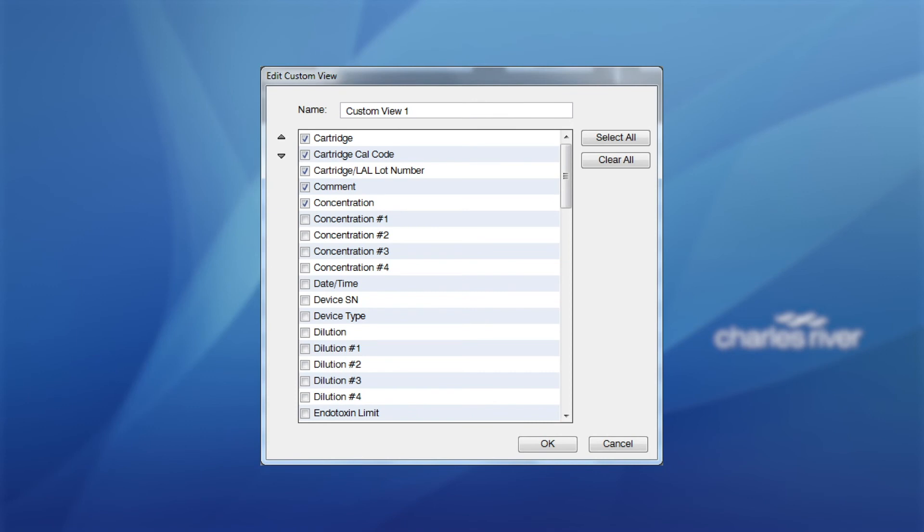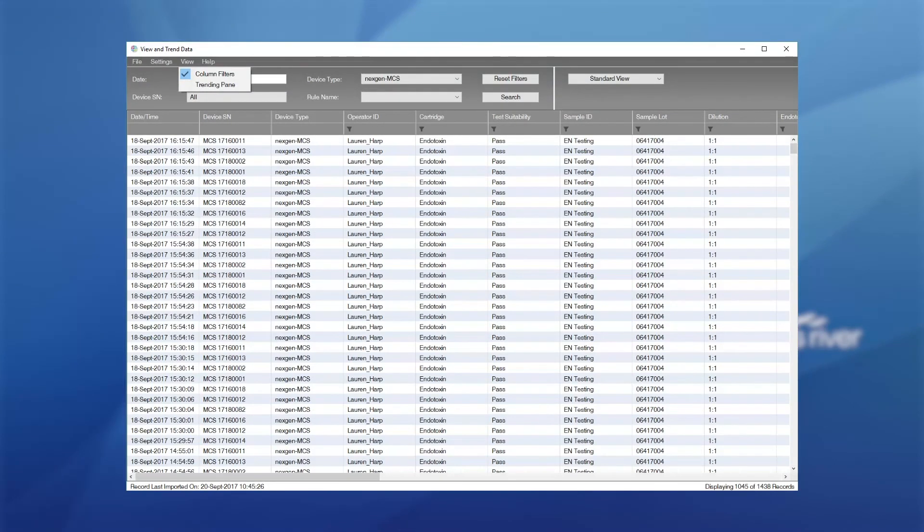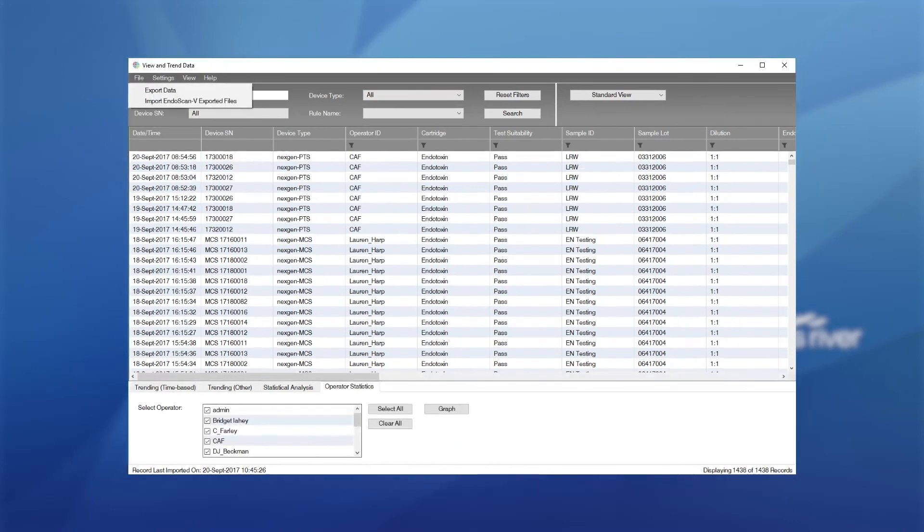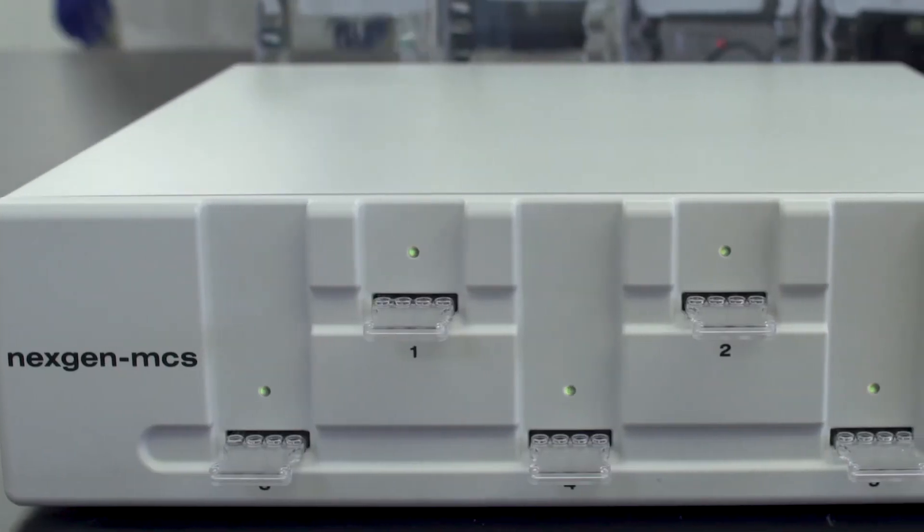Users can also use the trending pane by clicking on view trending pane. Under the trending pane, users can produce multiple graphs depending on their requirements. Once completed, the filtered data can be exported from Cortex by clicking on file, then export data as a CSV or XML file, which can then easily be uploaded to a LIMS. It's as simple as that.